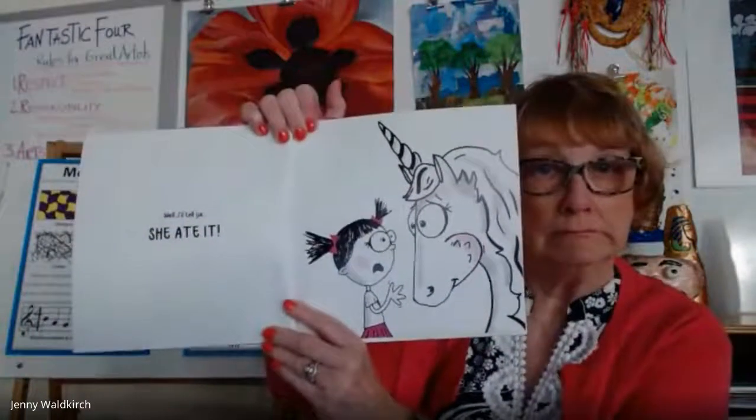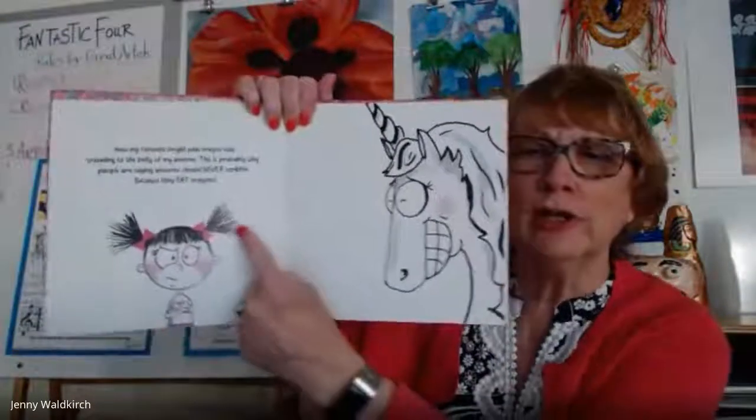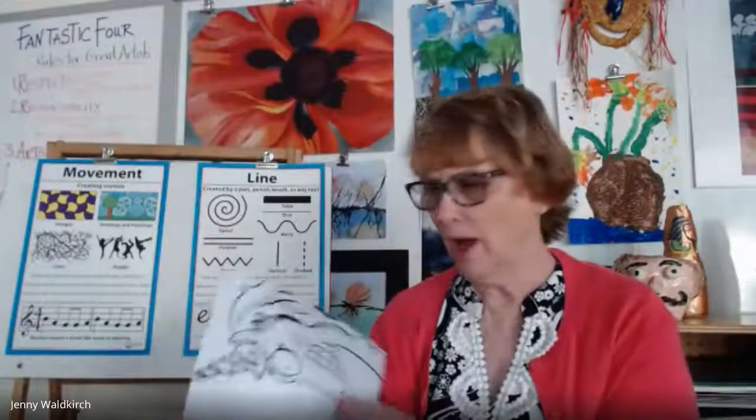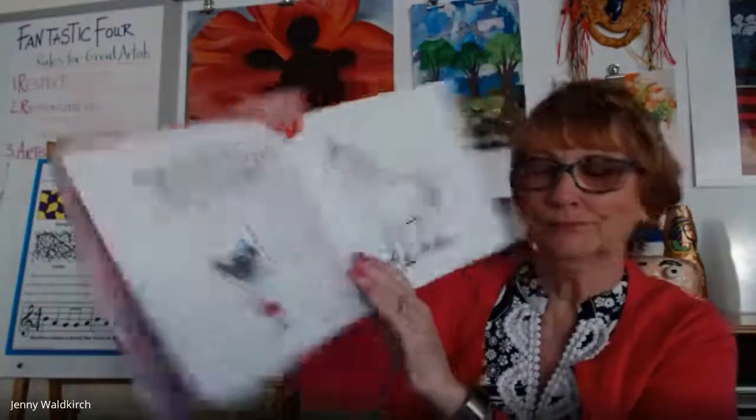"Well, I'll tell you. She ate it." Ew, I don't think I want to do that. "Now, my bright pink crayon, which was my favorite, is traveling to the belly of my unicorn." This is probably why people are saying unicorns should never scribble — because they eat crayons. Look how happy that unicorn is. Look at her face. She can tell you by her expression how she's feeling. That means the illustrator has done their job. "Then it occurred to me, maybe unicorns don't know how to use crayons. So I gathered all my crayons and started to scribble. I made a blue scribble, a pink scribble, a yellow scribble, and even a crazy scribble, which was a mix of colors."